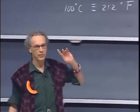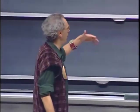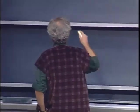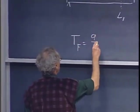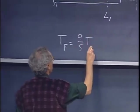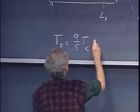And so if you want to convert from Fahrenheit to centigrade, or the other way around, then the temperature in Fahrenheit is nine-fifths times the temperature in Celsius plus thirty-two.